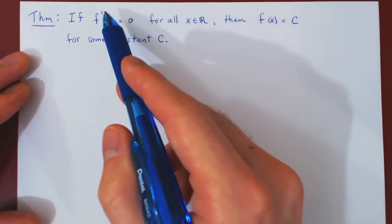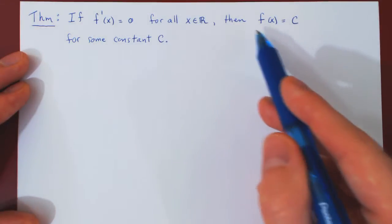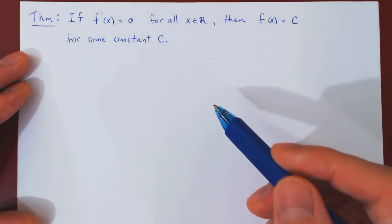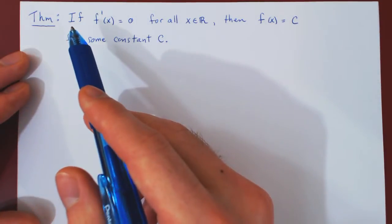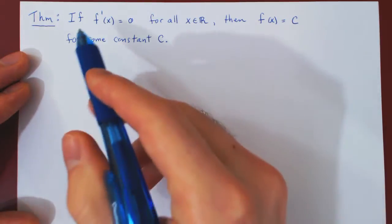So all we're saying is if the derivative of the function is always equal to 0, then the function must be a constant function. So the graph of the function must be a horizontal line. Now before we prove this rigorously with the mean value theorem, think about how intuitive the result is.